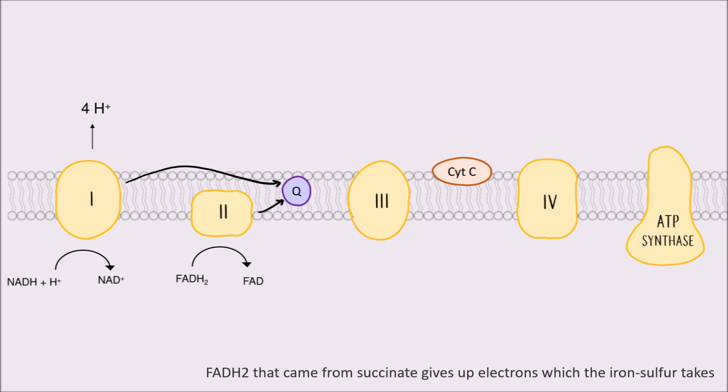FADH2 that came from succinate gives up electrons which the iron sulfur takes. Coenzyme Q is reduced, but no protons pumped at complex 2. Moving on to complex 3, COQH2 dumps electrons outside to cytochrome C, which can only take one, so the Q cycle begins to run.